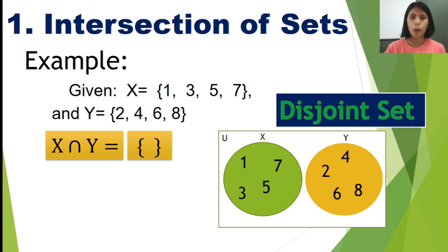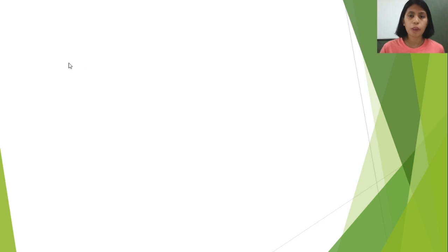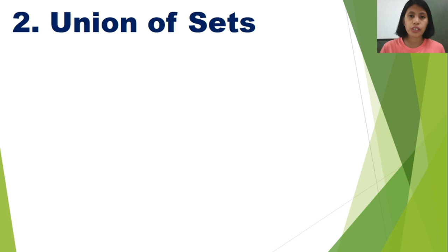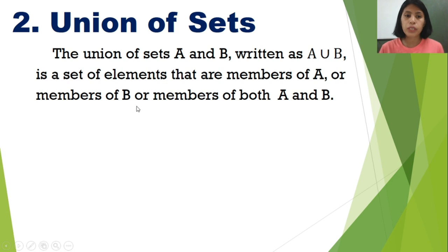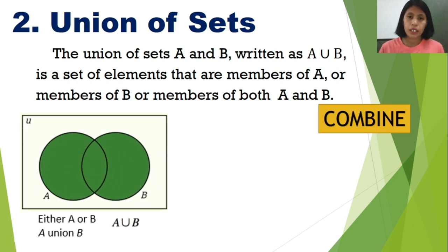Let's proceed to the second operation: union of sets. The union of sets A and B is written with a U symbol — just like the letter U — to denote union of sets. It is a set of elements that are members of A, or members of B, or members of both A and B. Therefore, we need to combine the two sets. The shaded portion in the illustration covers both A and B, so we get all the elements of A and all the elements of B.